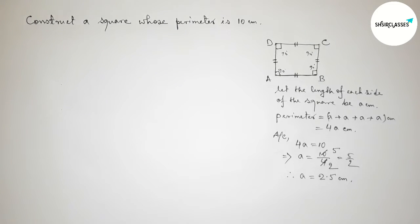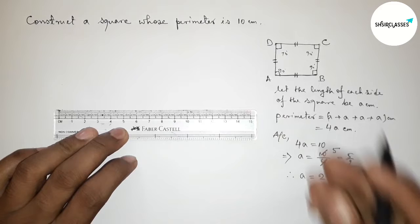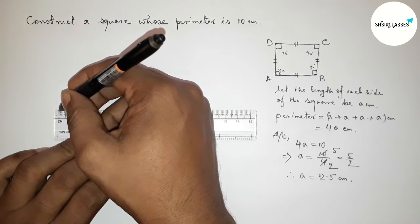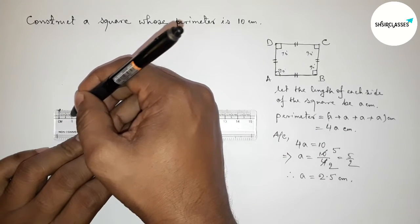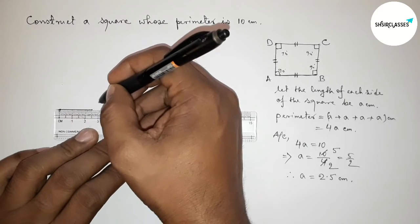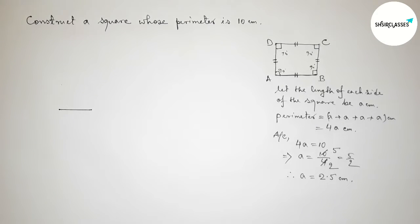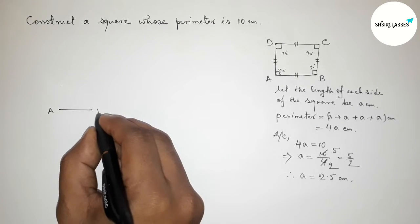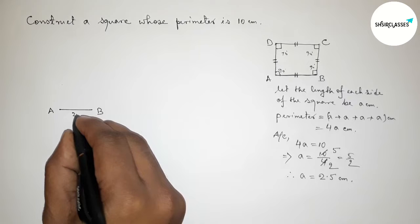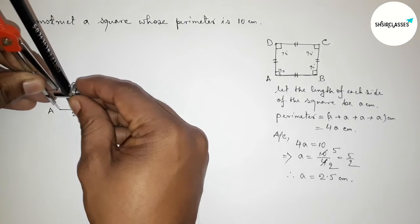Now we have to construct a square with each side 2.5 centimeters. First, drawing a line segment of length 2.5 centimeters — this is AB, where AB equals 2.5 centimeters. Next we have to draw a 90-degree angle at point A.